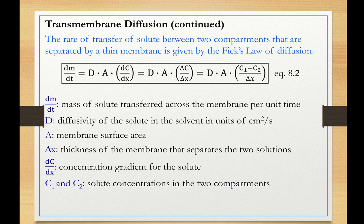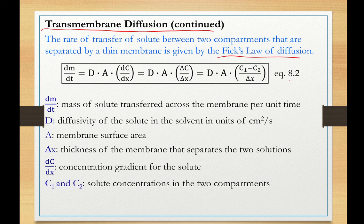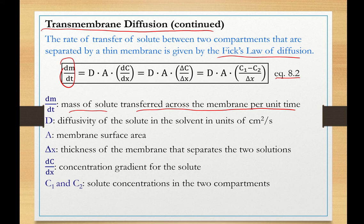The transmembrane diffusion is mathematically described by Fick's equation, which you see as equation 8.2. Here again, dm/dt is the mass of solute transferred across the membrane per unit time. D is the diffusion coefficient, similar to the dissolution process. A is the membrane surface area, delta x is the thickness of the membrane that separates the two solutions.